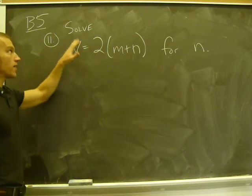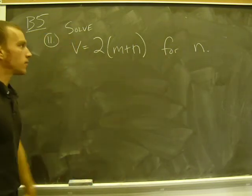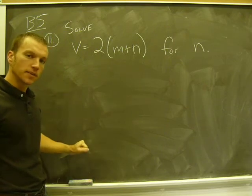Okay, V5 problem number 11. Direction: solve this equation for the variable n. So what I've got to do is get, remember, n by itself. My goal is to say n equals and then some expression.